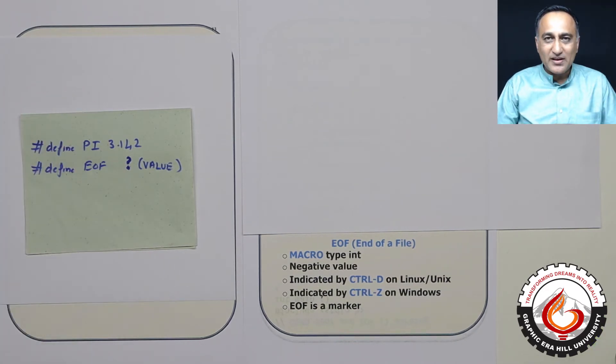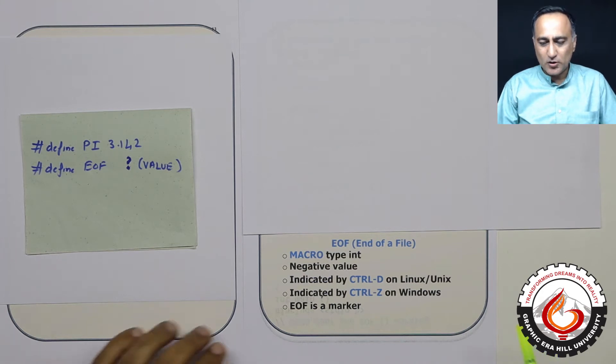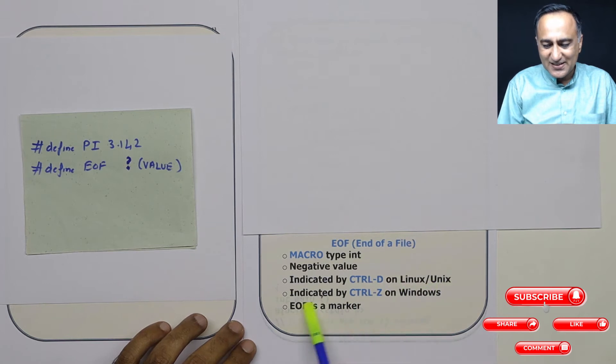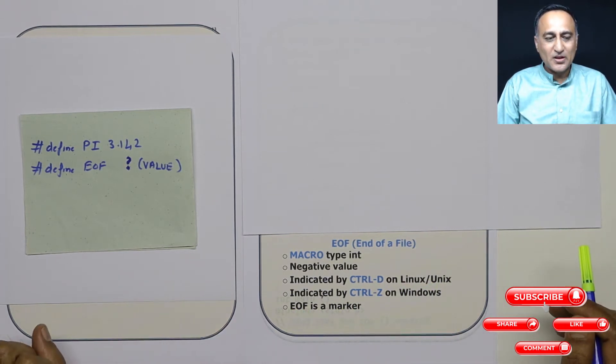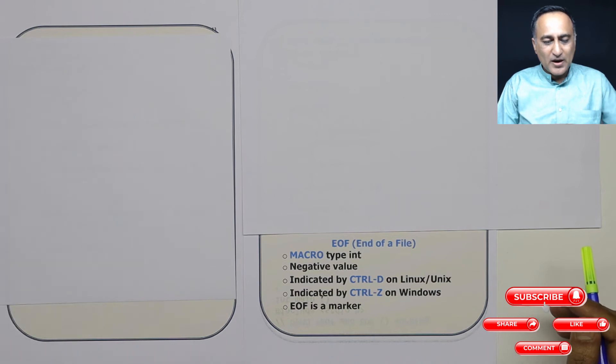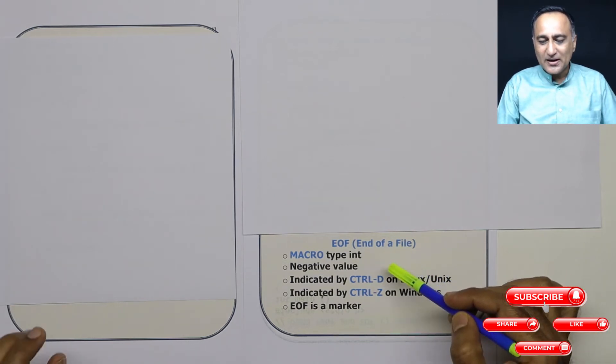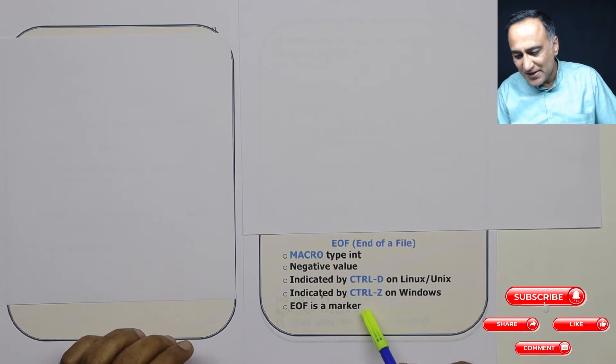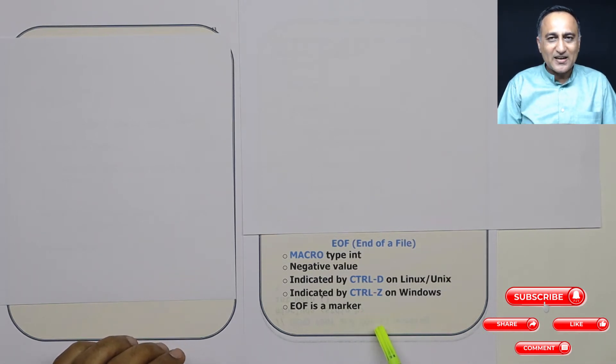That's why I put question mark because EOF is defined differently for different operating systems. So let's try to understand why we need this end of file. Suppose I have created a file with all these contents and I have stored it in a hard disk. When a program is reading this particular data, there should be some indication to tell that program that you have reached the end of the file.